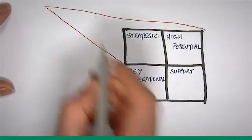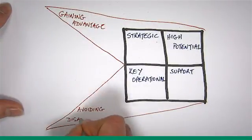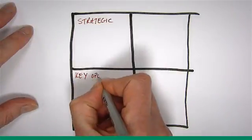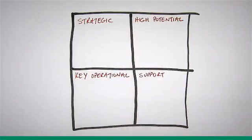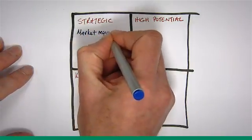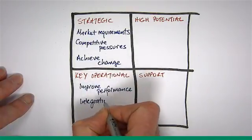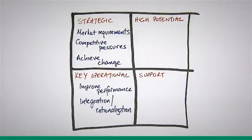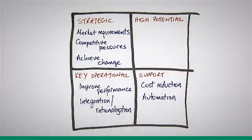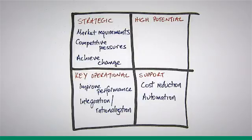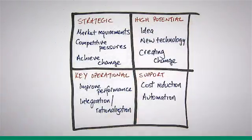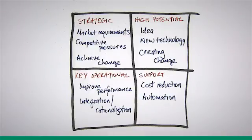The strategic and high potential investments are about gaining advantage, while key operational and support investments are about avoiding disadvantage. The driving forces for each quadrant are different. In the strategic quadrant, it is about perceived market requirements, competitive pressures and ultimately achieving business change. For key operational investments, it is about improving performance of existing activities — often looking for integration and rationalisation to speed up business processes, cut costs, or meet specific industry legislation. For support investments, it is about cost reduction and efficiency improvement through automation, or to meet the requirements of general legislation. High potential investments are driven by innovative business ideas and new technology, as we seek potentially disruptive opportunities.